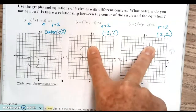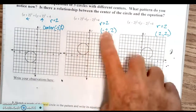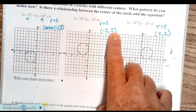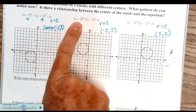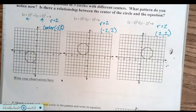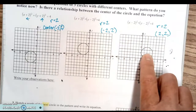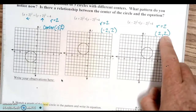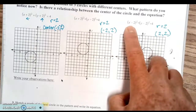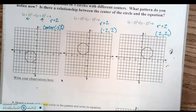Let's check the other two. This one has a center two left and up two: (-2, 2). In the equation you have (x + 2) and (y - 2) — again the opposite. The third one has a center two right and up two: (2, 2), and the equation has minus, minus — also opposite. The observation appears to be true for all three.